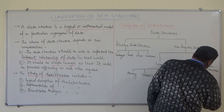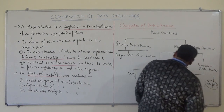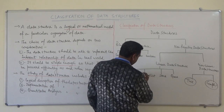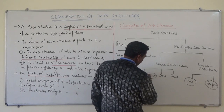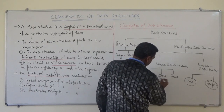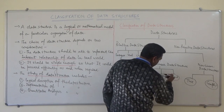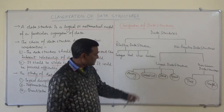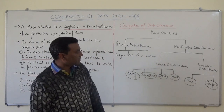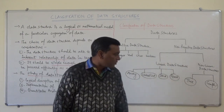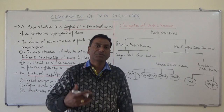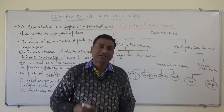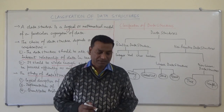So the two non-linear data structures are tree and graph. In summary, the linear data structures include array, linked list, stack, and queue; and the non-linear data structures include tree and graph. About array, linked list, stack, queue, tree, and graph we will study in detail in the subsequent videos.